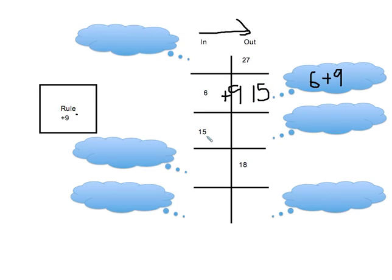This is another relatively easy one because I'm going from in to out — it's just going straight forward so I can follow the rule. In my thinking bubble, I'm thinking 15 plus 9. Well, 15 plus 9 is like 15 plus 10, which is 25, and then back up 1 because I only got to add 9, so I'm up to 24.